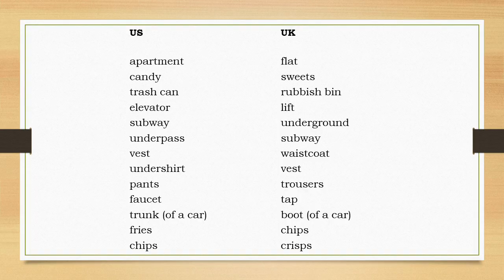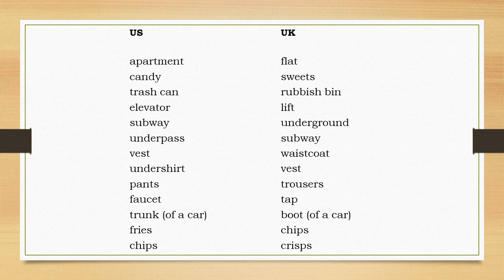In America, people might live in an apartment, whereas in Britain they would live in a flat. Red vines are candy in the US but sweets in Britain. Americans would put their trash in the trash can, whereas here we would put our rubbish in the bin. You would use an elevator in America but a lift in Britain. Subway is an interesting word — the subway in America is what we would call the underground in Britain, particularly in London, whereas what we would call a subway in Britain is what Americans would call an underpass — just a little tunnel to walk underneath a road.